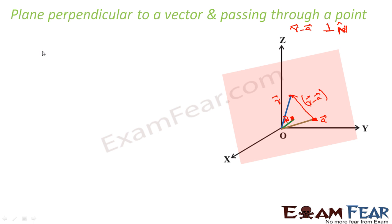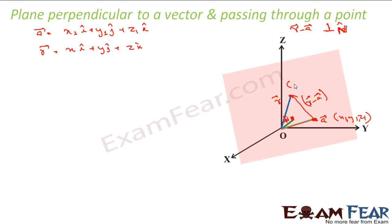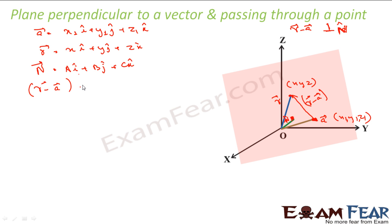Since a is a point we already know, let point a be x1·i-cap plus y1·j-cap plus z1·k-cap, because this point is (x1, y1, z1). The r point is an unknown variable point, so let this point be x·i plus y·j plus z·k. Let n be a·i plus b·j plus c·k. Then r minus a vector dot n vector has to be 0.